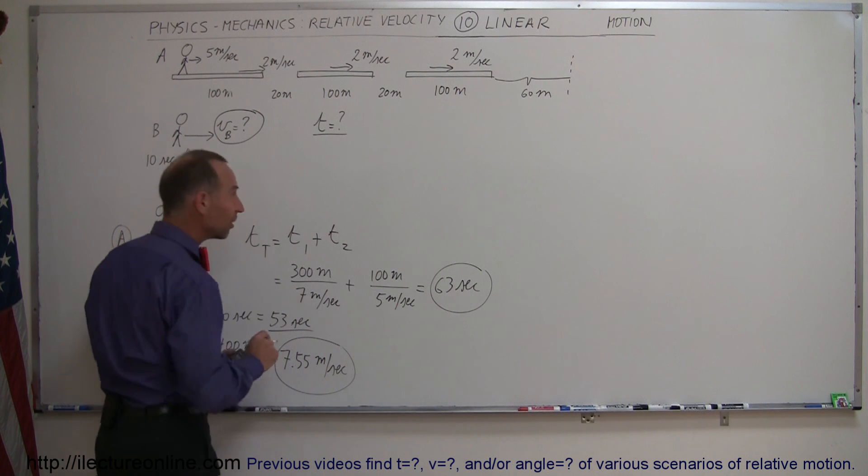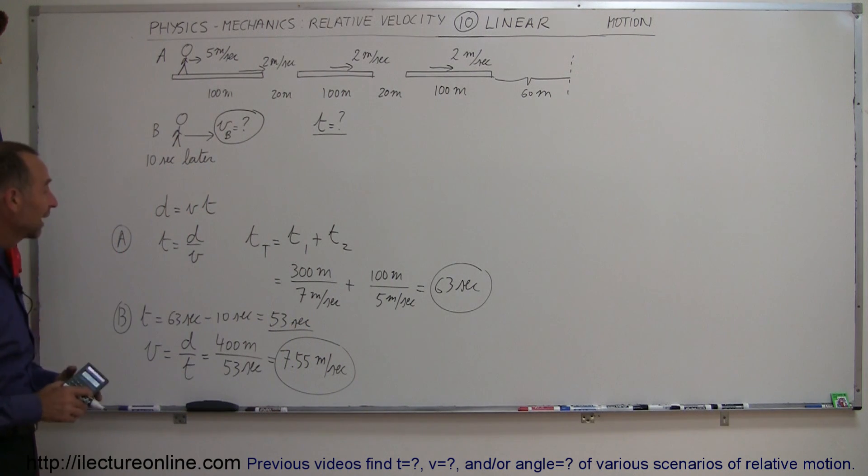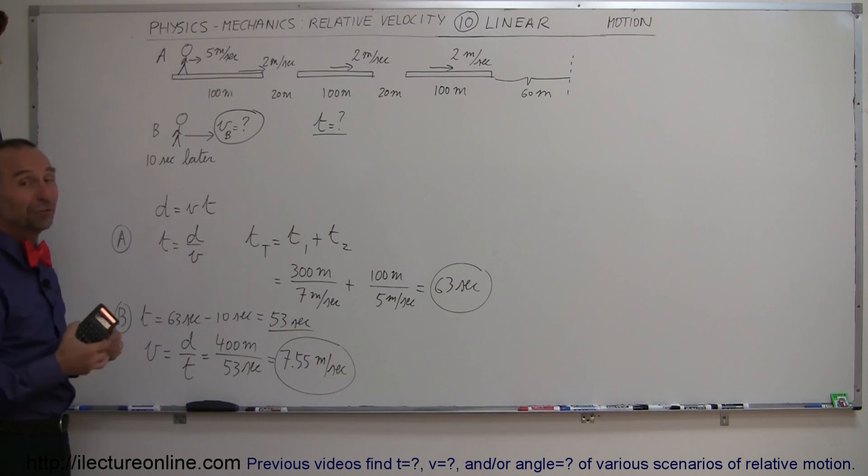If you can keep that up for 400 meters, he'll make it to the boarding area at the exact same moment as passenger A. Matter of fact, if I was passenger B, I'd probably run on those conveyor belts as well. All right, that's how you do relative velocities in various ways. Hopefully this will help you understand that concept.